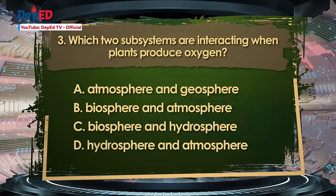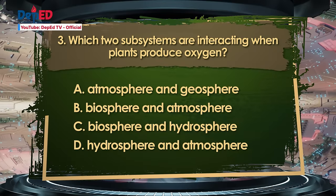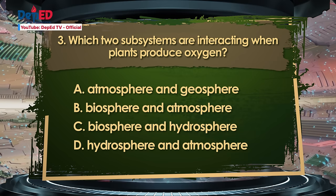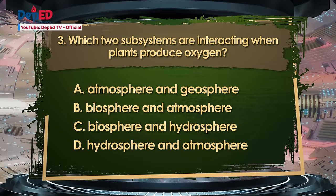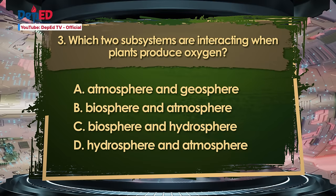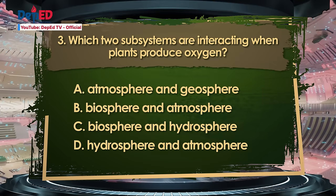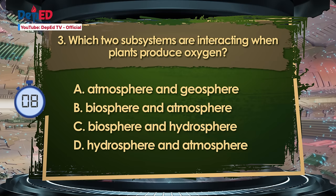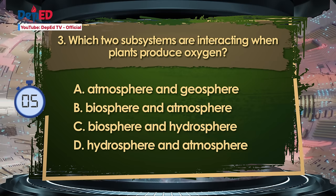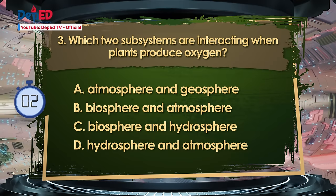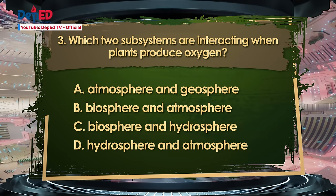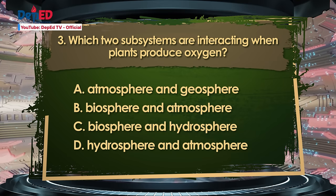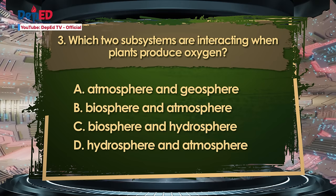Number 3. Which two subsystems are interacting when plants produce oxygen? A. Atmosphere and geosphere. B. Biosphere and atmosphere. C. Biosphere and hydrosphere. D. Hydrosphere and atmosphere. The correct answer is letter B — Biosphere and atmosphere.